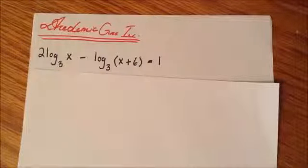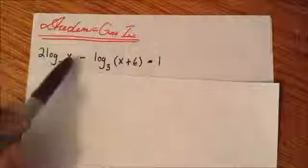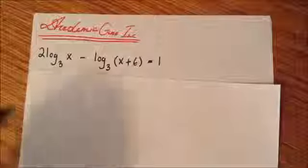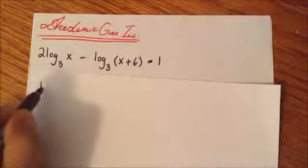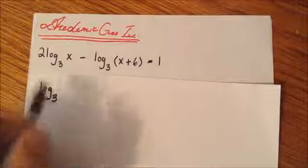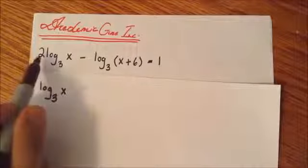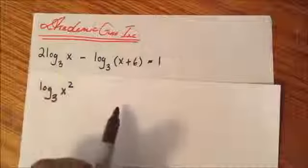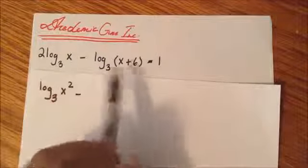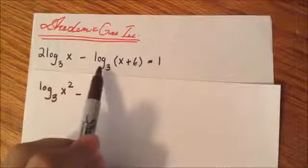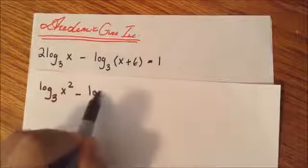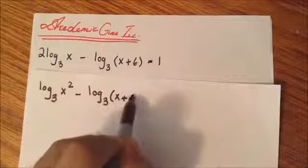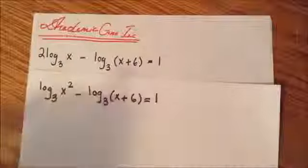So using our properties, I would raise this x to the power of 2, and this is how I'm going to start the problem. We're going to have log base 3 of x, now raised to the power of 2, so it's going to be log base 3 of x squared minus—I really can't do anything here, so I'm just going to leave it as it is—log base 3 of x times x plus 6 equals 1.